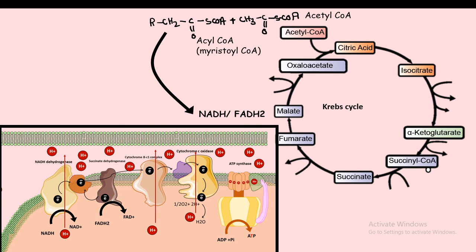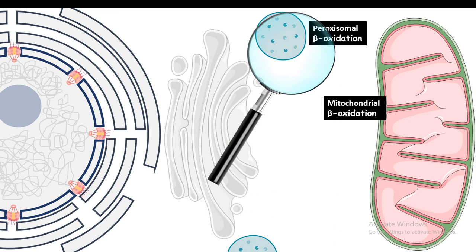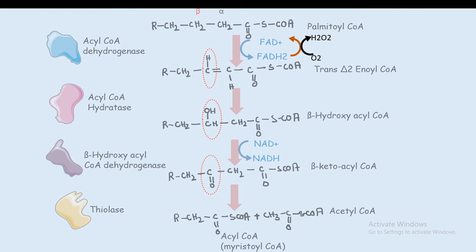In peroxisomal beta oxidation, the enzymes that carry out the process are very similar to those in mitochondria. The key difference is that in peroxisomal beta oxidation, the FADH2 is not channeled into the electron transport chain; instead, it is utilized to reduce oxygen into hydrogen peroxide. That is how peroxisomes produce hydrogen peroxide, and beta oxidation is critical for this process. This allows us to appreciate how the same pathway operates differently in two different organelles.